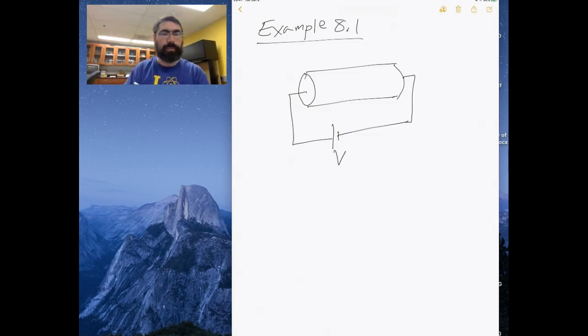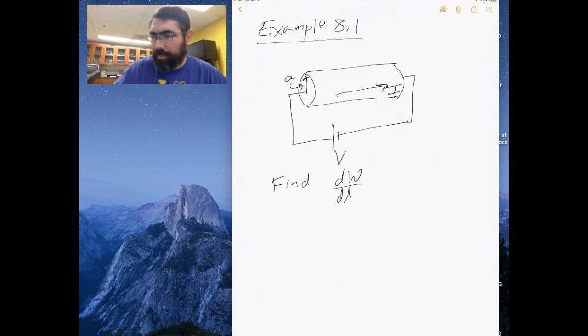I'm going to hook it up to this battery, or basically a voltage supply. So I have some supply V, I have my wire which has a radius of a, and then I have a current flowing through this wire with a value of I. What we want to find is the power, the energy per time, dw/dt in this particular case.